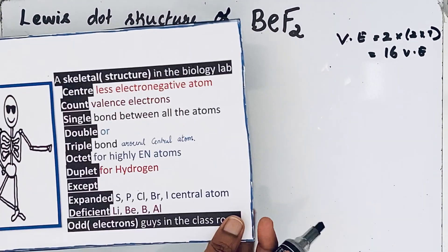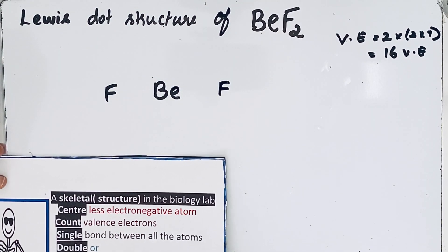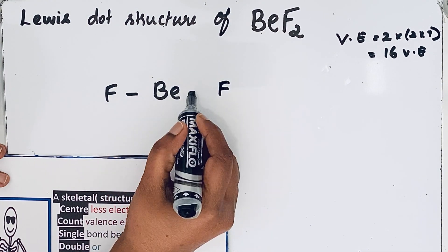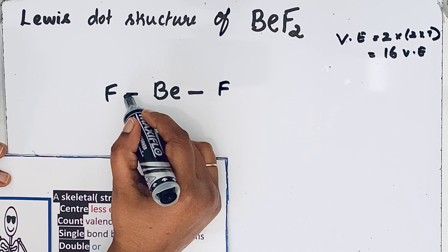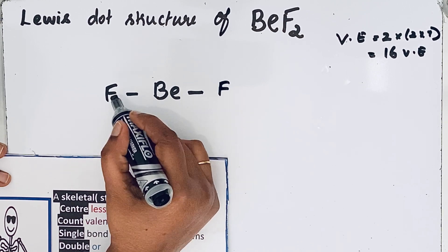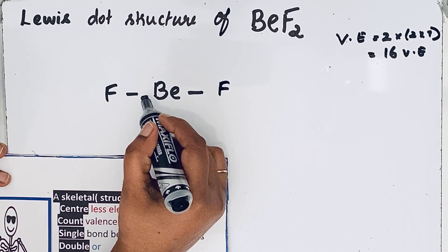Now come to the next step: single bond between all the atoms, so we go to draw the single bond. Single bond means there are two electrons involved in the bond formation, one from fluorine and one electron from beryllium.